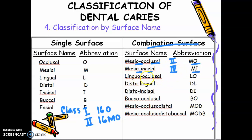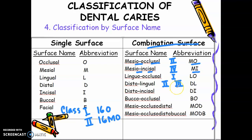Next, linguo-occlusal. When you have linguo-occlusal, what tooth is it? You always determine the tooth first. Posterior. So lingual surface — class 1. Next, disto-lingual: distal surface involving the lingual. This can be class 2 or class 3 — it can be posterior or anterior. Disto-incisal: there is an incisal edge involved, so that will be class 4. Buccal-occlusal: there is a buccal surface, so that is posterior; occlusal is also posterior — this is class 1.